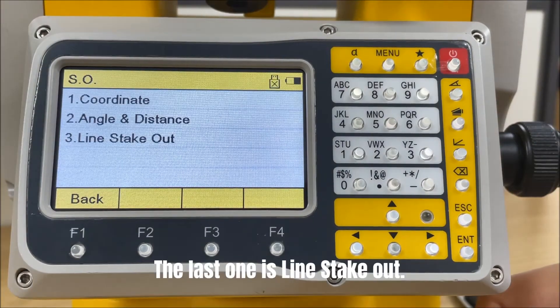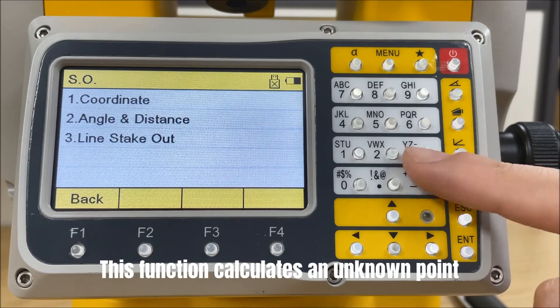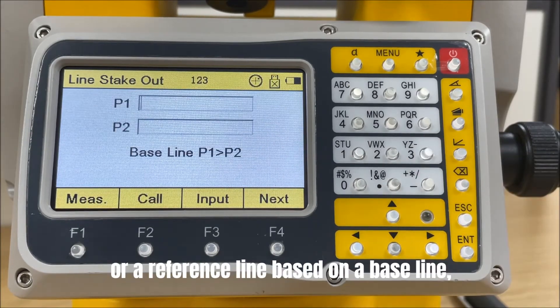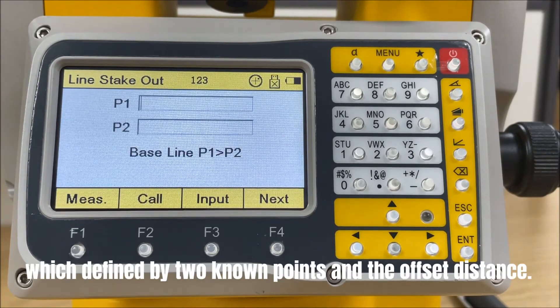The last one is line stake out. This function calculates an unknown point or a reference line based on a baseline, which is defined by two known points and the offset distance.